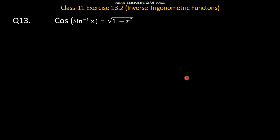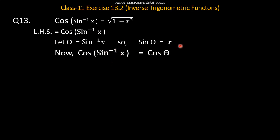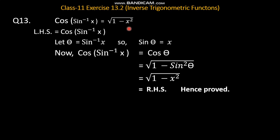अब देखते हैं question number 13: cos(sin inverse x) is equal to square root of 1 minus x square. यह बिल्कुल वैसा question है जैसे हमने 13.1 में किये थे। sin inverse x को हम theta let करते हैं, तो sine theta is equal to x. Left hand side में value place करें: cos(sin inverse x) is equal to cos theta. हमें पता है cos theta होता है square root of 1 minus sin square theta. Sine theta की value x है, so cos theta is equal to square root of 1 minus x square, which is equal to right hand side.